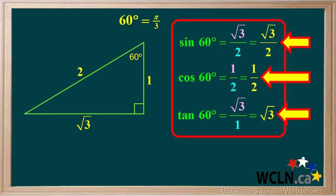So the exact value for the tangent of 60 degrees is the square root of 3. In summary, these are the exact values for the sine, cosine, and tangent of 60 degrees, or pi over 3 radians.